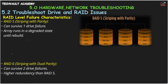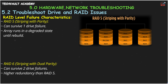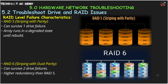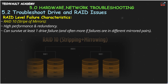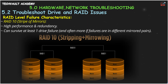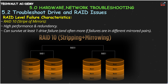RAID 5 striping with parity uses at least three drives and can survive the failure of one drive. The array will enter a degraded state but will remain online — replace the failed drive to rebuild. RAID 6 striping with dual parity is even safer, using at least four drives and surviving the failure of two drives simultaneously. RAID 10, a stripe of mirrors, combines the speed of RAID 0 with the safety of RAID 1. It requires at least four drives and can often survive multiple drive failures, as long as both drives in a single mirrored pair don't fail.